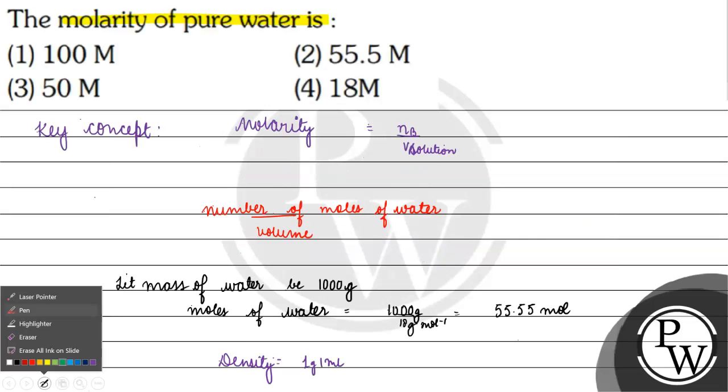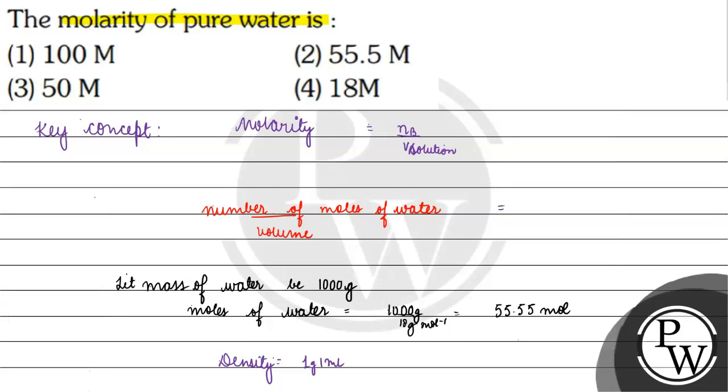Coming back to the question, molarity of water is number of moles of water, 55.55 moles, divided by volume of water, 1 liter, which equals 55.55 moles per liter.